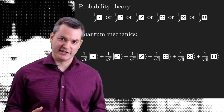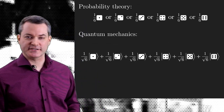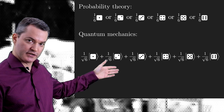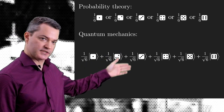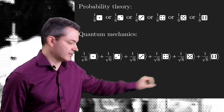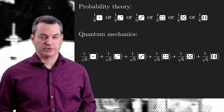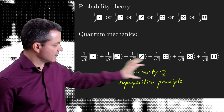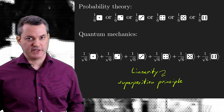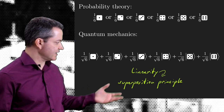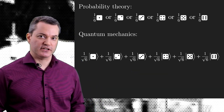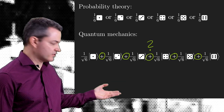Let's assume for the sake of the explanation that our calculations yield the following state after shaking: 1 over square root of 6 times state |1⟩ plus 1 over square root of 6 times state |2⟩, plus and so on. First of all, this is indeed a state, because according to a fundamental property of quantum mechanics, such weighted sums of states are themselves states. Mathematically, these states are elements of a vector space which can be added together and can be multiplied by complex numbers.